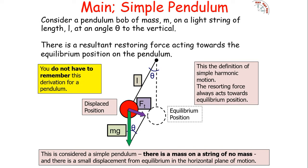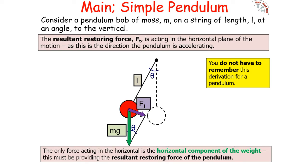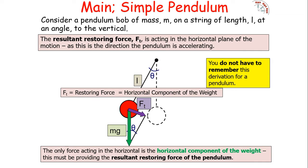Because the pendulum is not at its equilibrium position, as a simple harmonic oscillator there will be a resultant restoring force acting towards the equilibrium position. This is literally from the definition of simple harmonic motion — there's always a restoring force acting towards the equilibrium position. The resultant restoring force acts in the horizontal plane of motion, because that's the direction the pendulum is accelerating. The only horizontal force on the pendulum is the horizontal component of the weight, so that must be the resultant restoring force.